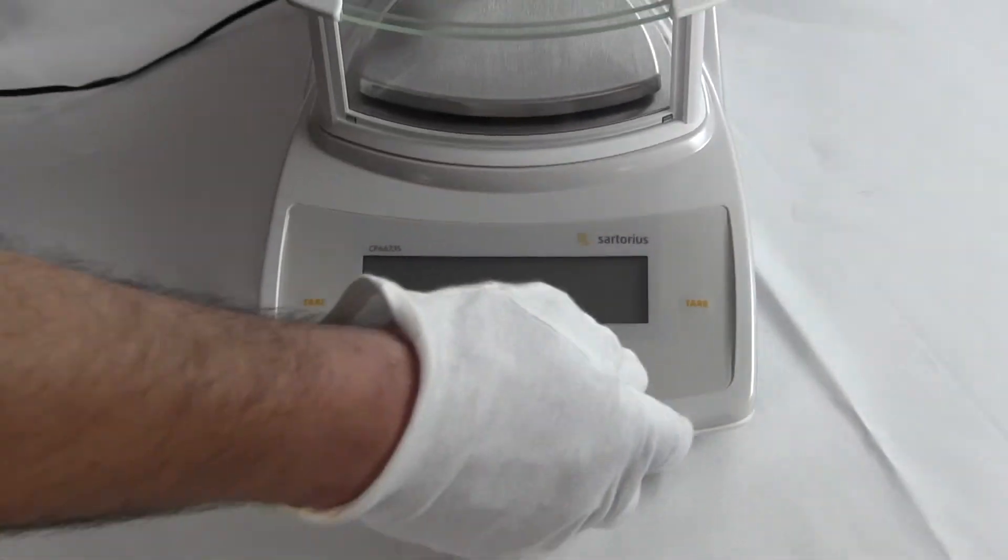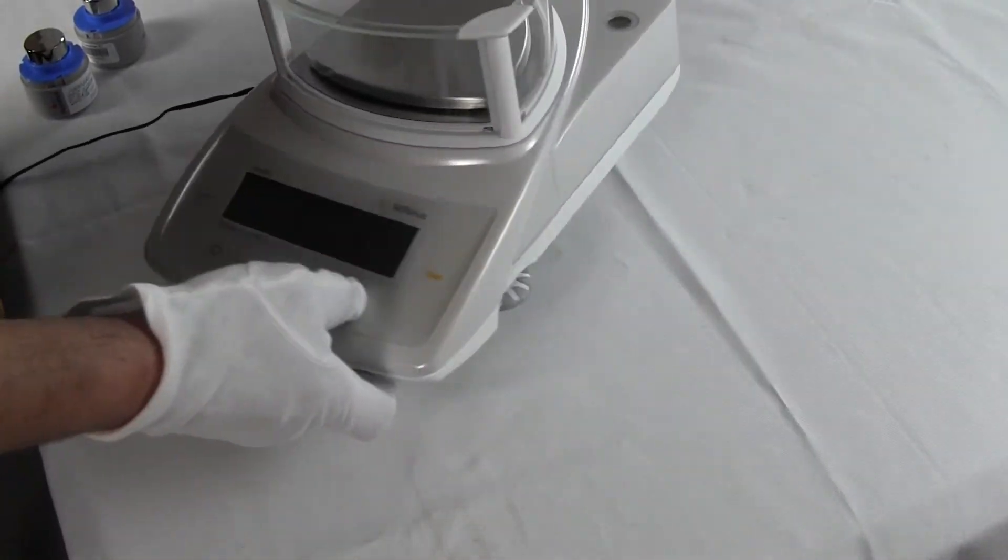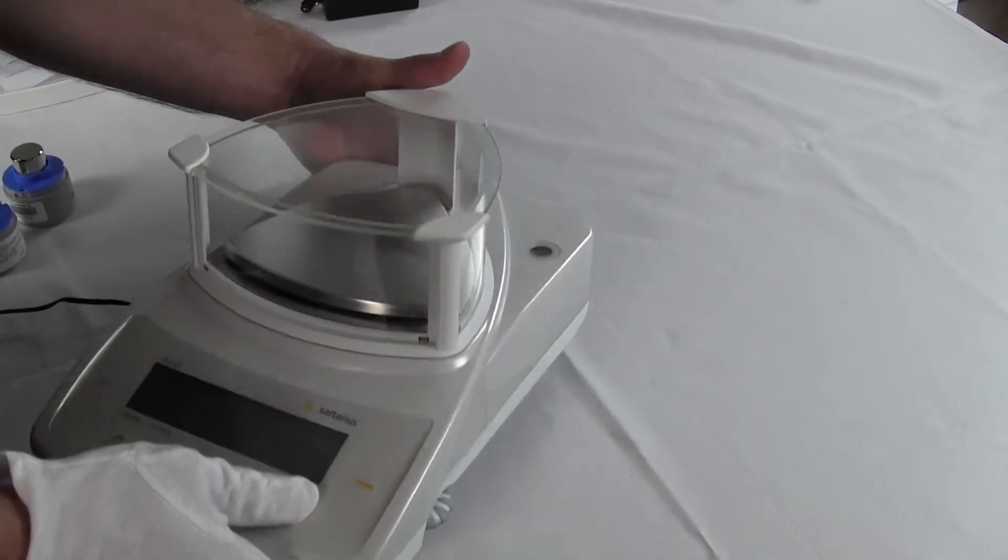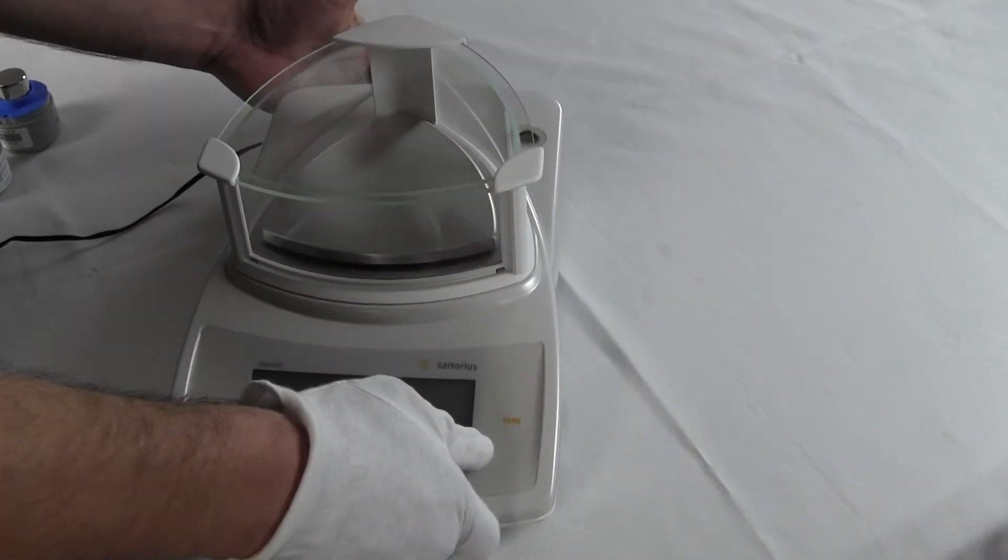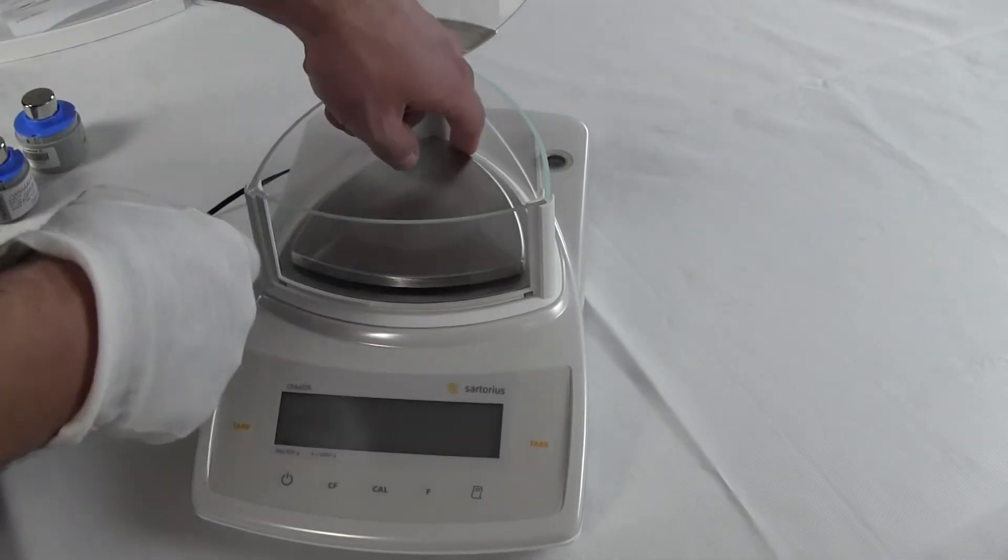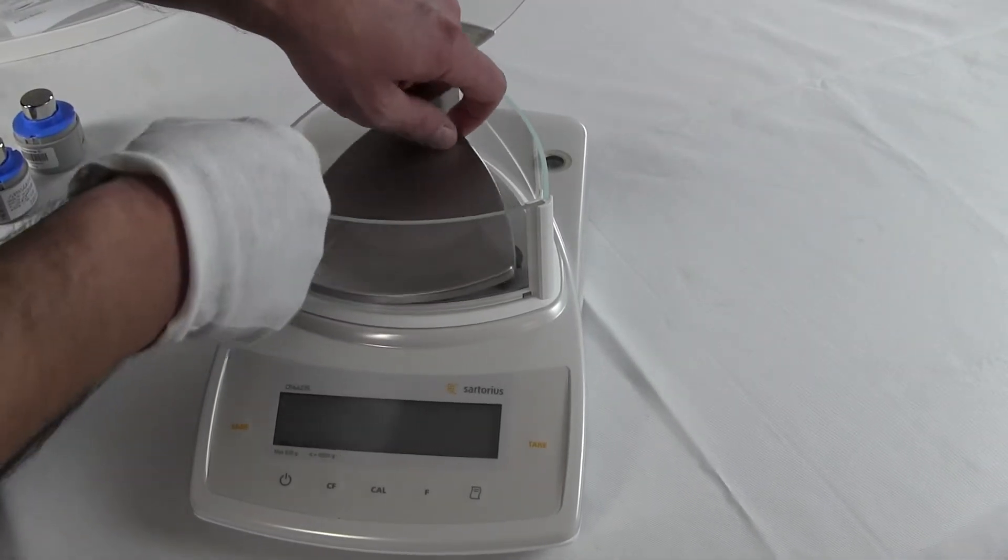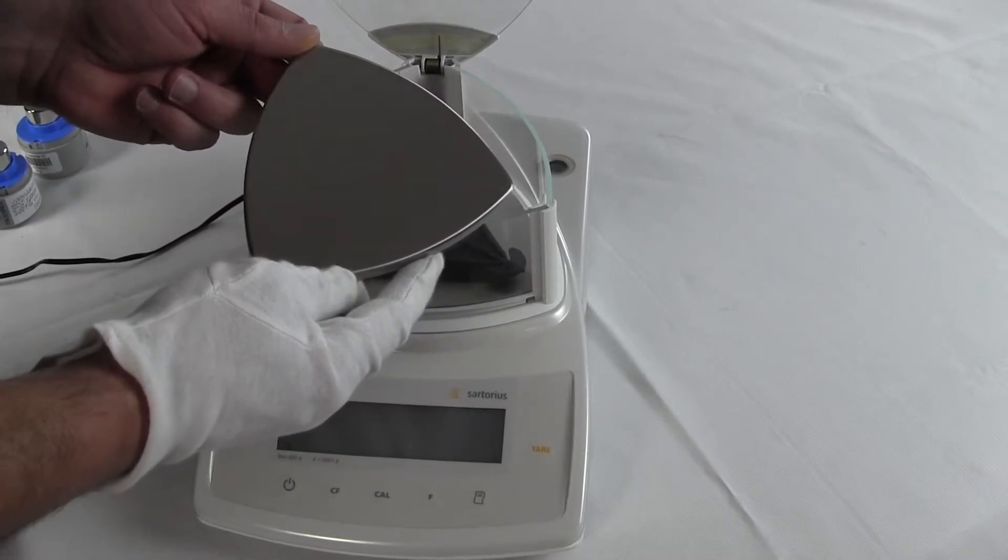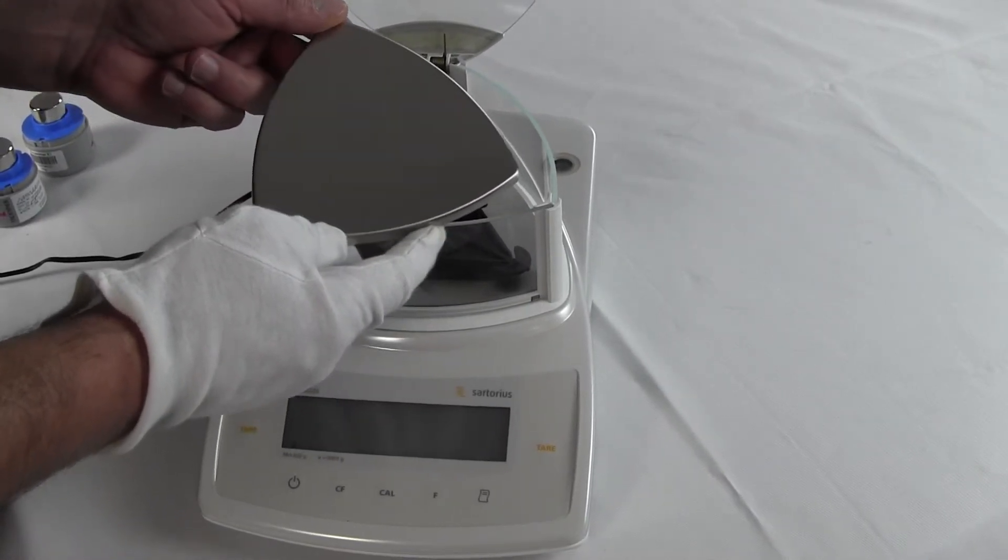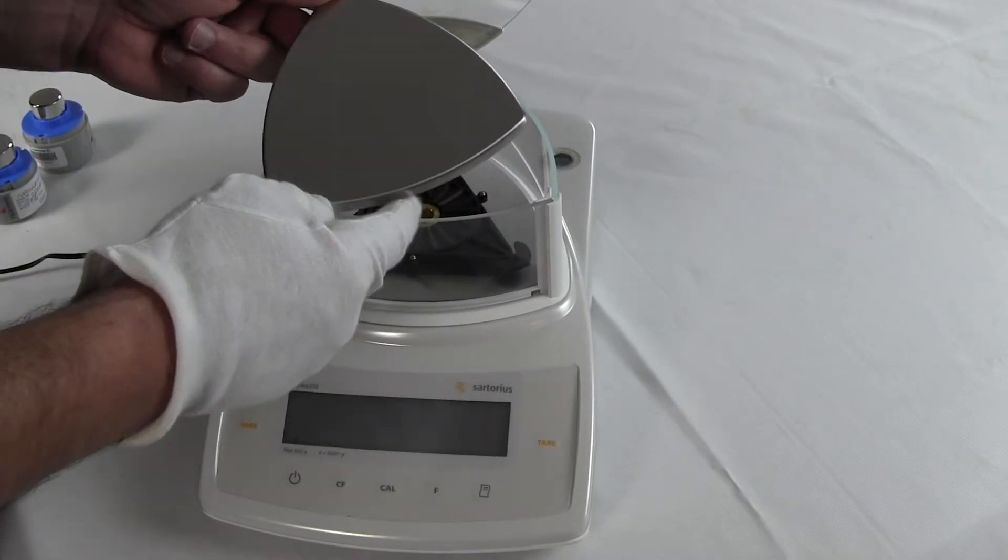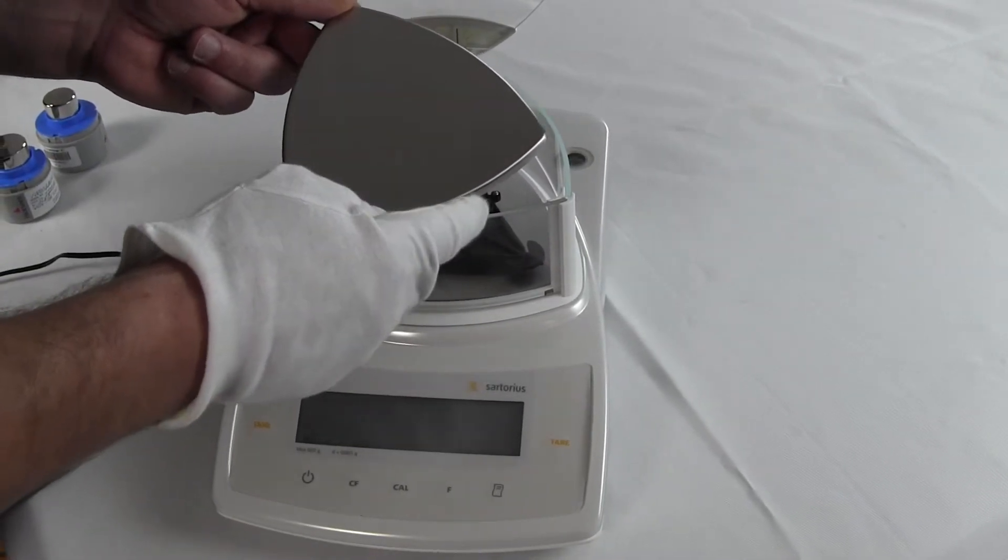Some of the additional features on this balance I'd like to show you. The balance has two adjustable feet on the bottom. Let me take off this draft shield so I can turn the balance around and show you some of these features. This has a nice triangular stainless steel platform.